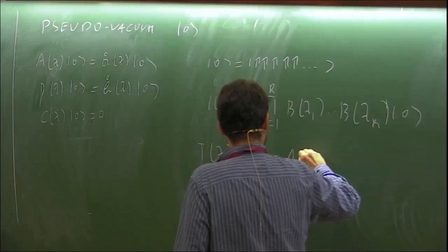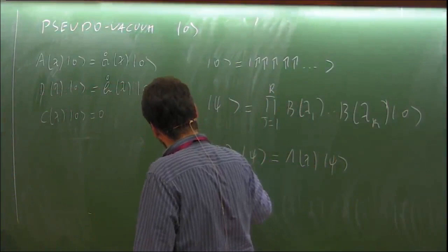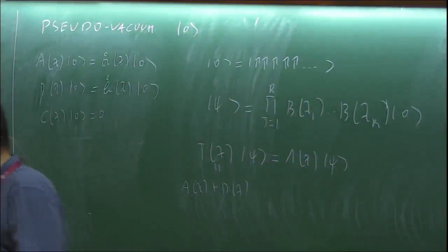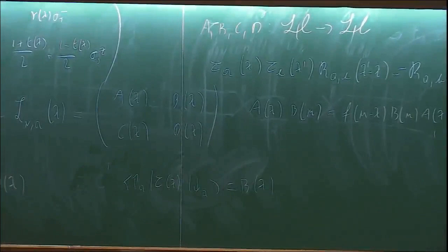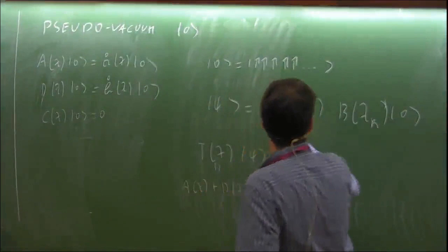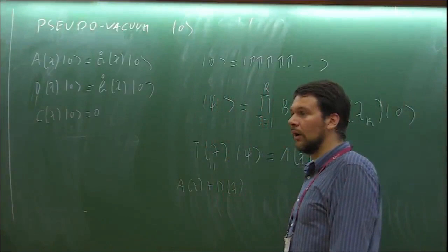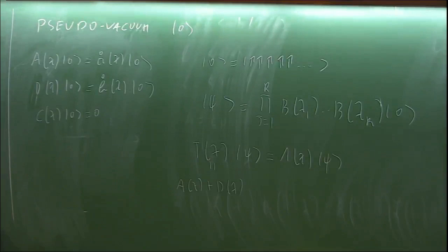You start from the vacuum, act with B operators that progressively lower the magnetization, and look for under which condition T(λ)|ψ⟩ = Λ(λ)|ψ⟩. T is A(λ) + D(λ). You commute A and D through the Bs — like constructing eigenstates for a harmonic oscillator or coherent state — until they hit the vacuum. Through the commutation, additional terms are generated, and the question is whether you can set all non-diagonal terms to zero.